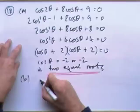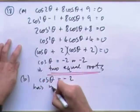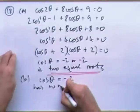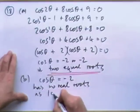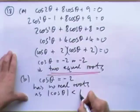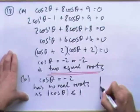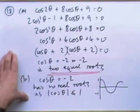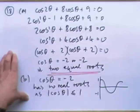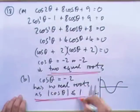Part b: show the equation has no real roots. That's easy — cosθ equals negative 2 has no solution because the cosine of θ must satisfy negative 1 ≤ cosθ ≤ 1. The cosine graph only gets as low as negative 1; you'll never get an angle whose cosine is negative 2. So it has no real roots. That's question 18.